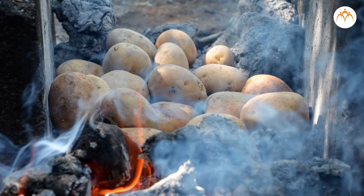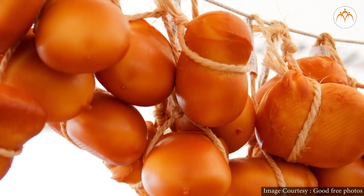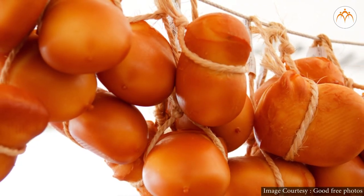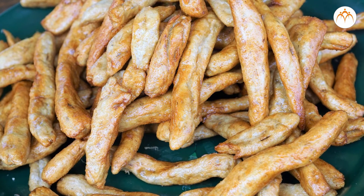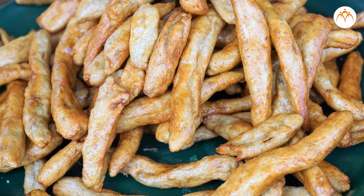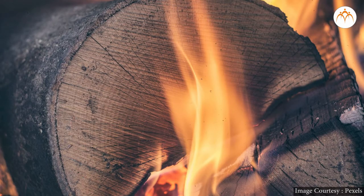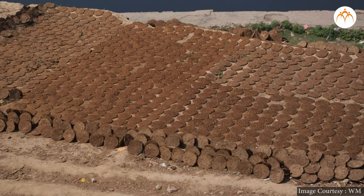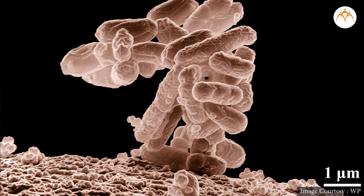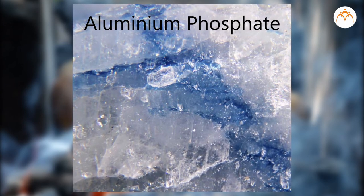Smoking is the process in which food is preserved and also it gets cooked with a typical flavour. Very often, foods like meat and fish are smoked. In different parts of the world, a variety of materials like wood, peat, and animal dung are used for smoking. Microbes from food are destroyed by smoking. Sometimes, aluminium phosphate is used in smoking.